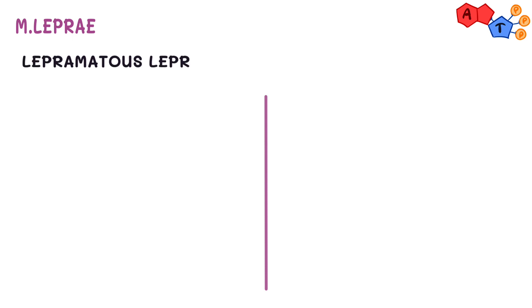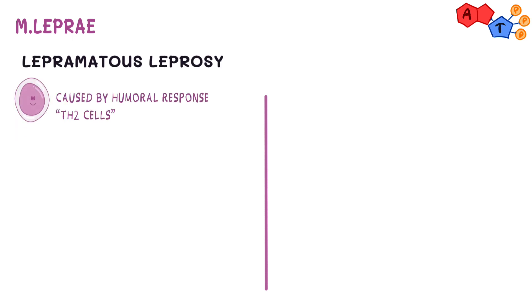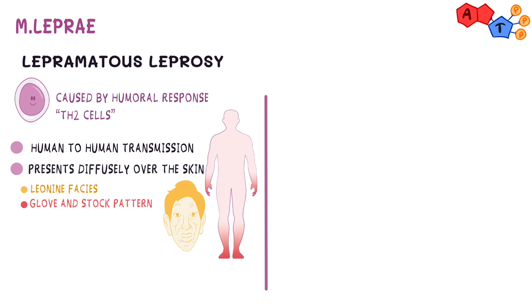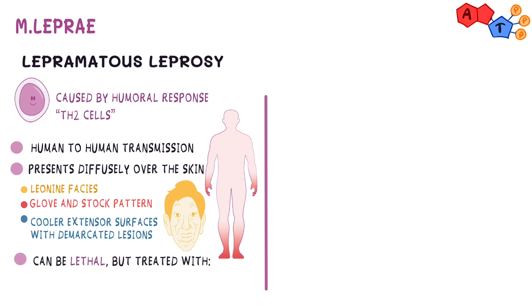It can present clinically in two ways. The first is lepromatous leprosy, which is caused by a humoral response promoted by Th2 cells. This presentation has a high chance of human-to-human transmission. This form presents diffusely over the skin with leonine facies. The patient's distal portions will also be affected, leading to a glove and stocking pattern. Numerous extensor surfaces are cooler and present with well-demarcated lesions. This form can be lethal; however, it may be treated using dapsone, rifampin, and clofazimine given for 2–5 years.